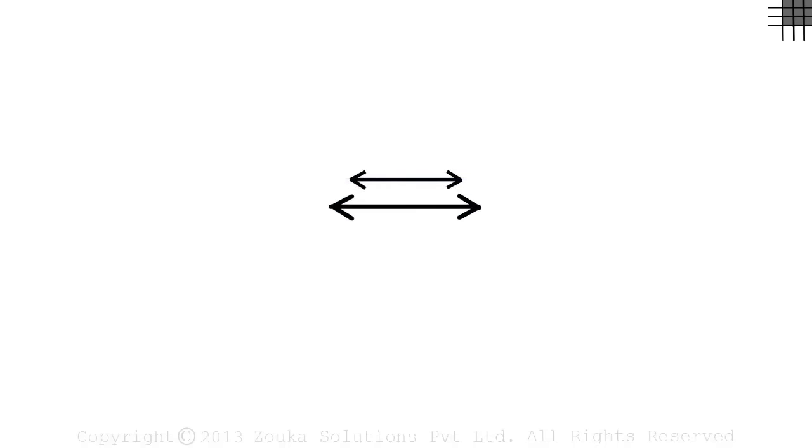But I can also draw a line like this or like this. It means that we do not have a single way in which a line can be drawn.